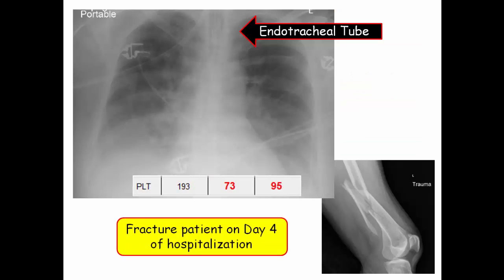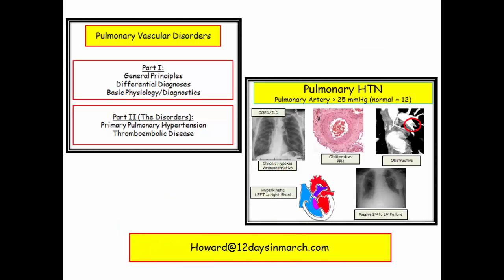Here is the patient with a traumatic femoral fracture, and here is her chest x-ray on day 4 of the hospitalization showing ARDS — note the endotracheal tube. Platelets were 193,000 on admission followed by a quick decline. This patient had a fat embolism. This was a long journey, but we integrated a lot of material including some of the key pathophysiology the NBME likes to assess. If you have any questions, email 12 Days in March. Thank you.